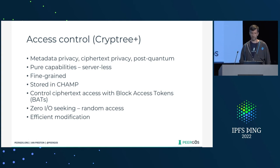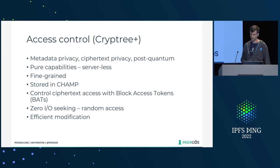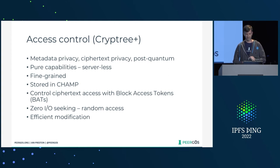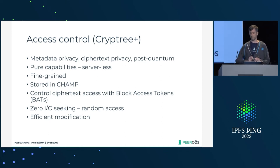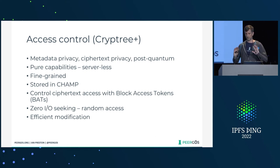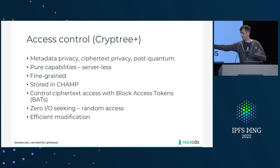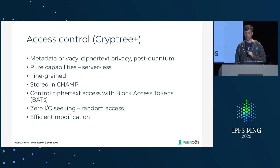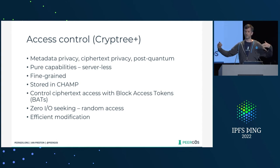The ciphertext access control is relatively new — as of January this year. We do that with things called block access tokens, or BATs, which I'll talk more about later. Another super cool thing we get is zero IO seeking. If you have a huge file — gigabytes, maybe even terabytes — it's encrypted, but you want to be able to seek somewhere down there really quickly. Obviously, if you encrypt the entire file at once, you would have to download the entire file and decrypt it, which is not going to work.